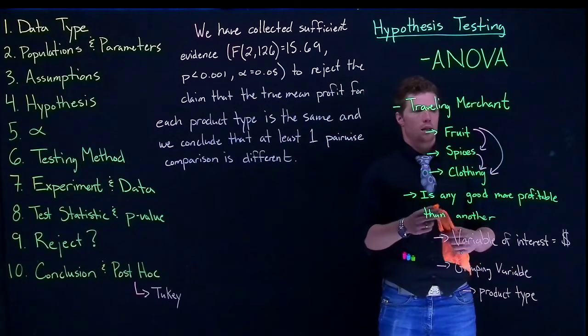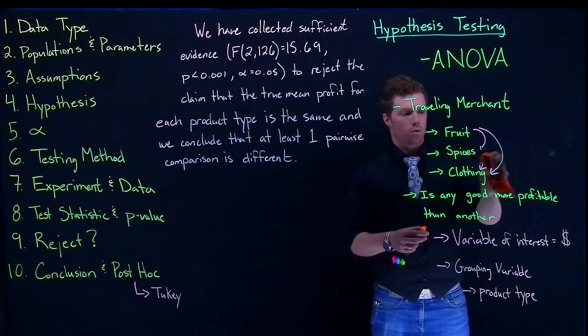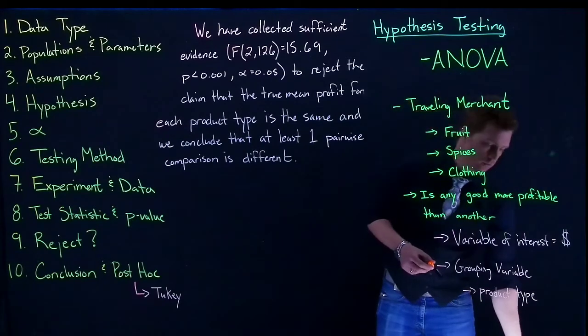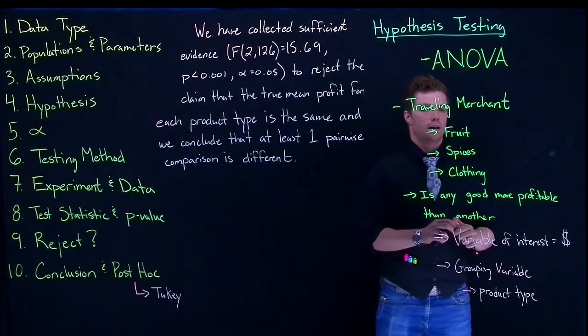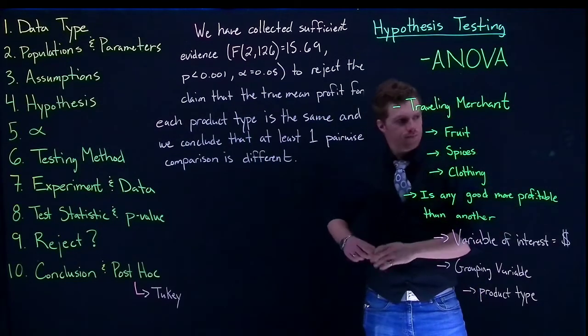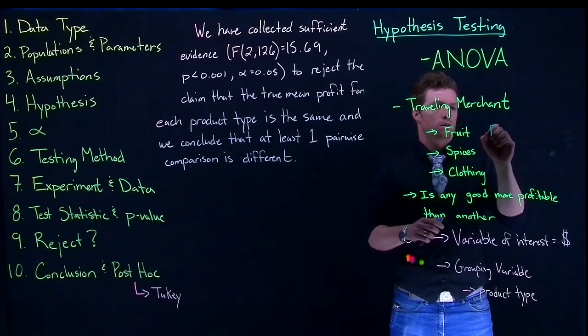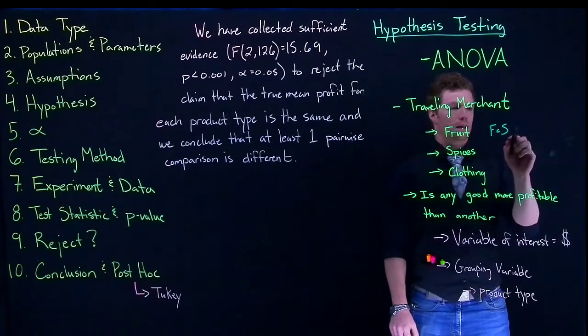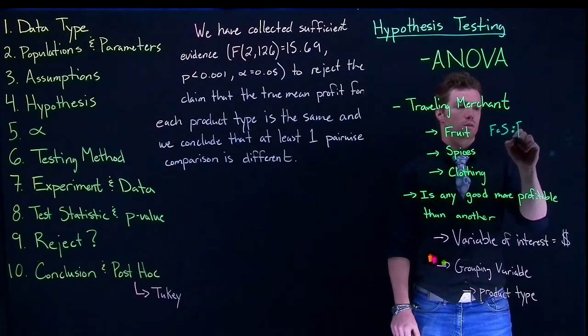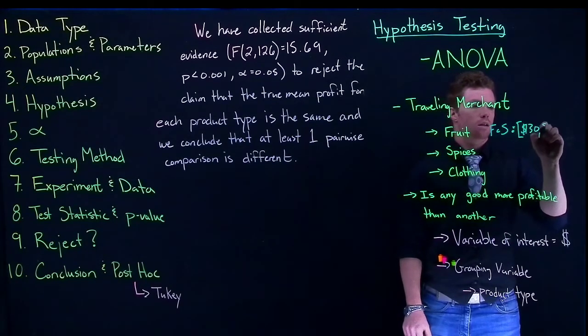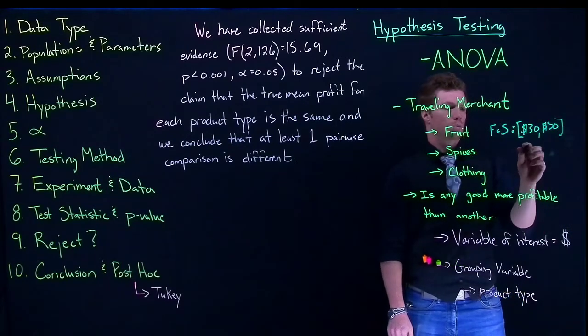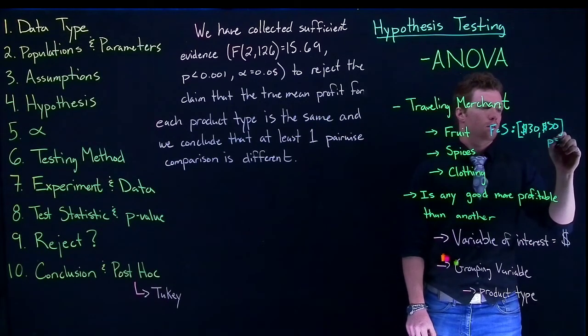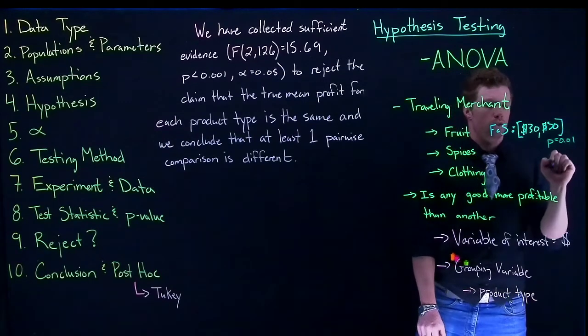So let's go ahead and I'm just going to erase these and I'm going to put up some confidence intervals just so that we have a point of reference. So we could say that, let's get a different color. We'll do fruit compared to spices. And we'll say that that guy wound up equaling the confidence interval was 30, 50, and we'll give it a p-value of 0.01.